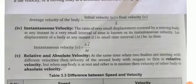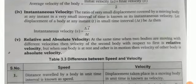Next is relative and absolute velocity. At the same time, when two bodies are moving with different velocities, then velocity of the second body with respect to the first is relative velocity. But when one body is at rest and the other is in motion, then velocity of the other body is absolute velocity.